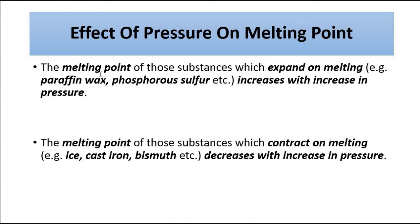For the first category — substances that expand on melting, like paraffin wax, phosphor, sulfur, etc. — the melting point increases with increase in pressure. For the second category of substances that contract on melting, the melting point decreases with increase in pressure.